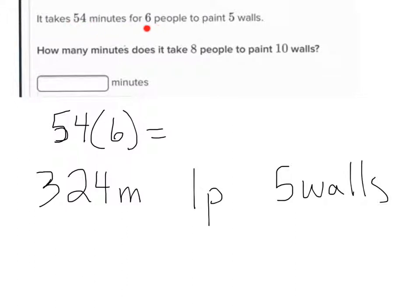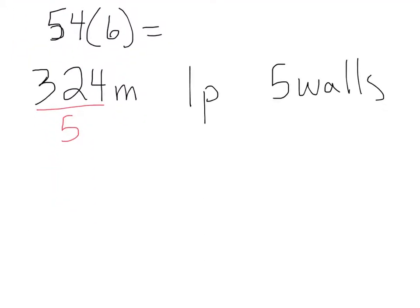It would take 324 minutes for 1 person alone to do 5 walls, which makes sense — it's going to take less time for 6 people than for 1 person. Now let's cut this down to 1 wall. To figure out how much time it takes for 1 person to do 1 wall, we divide 324 by 5, which gives us 64.8 minutes for a single person to do 1 wall.